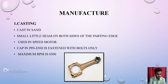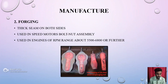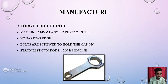Manufacturing process: First is casting. Casting sand leaves a small seam on both sides of the parting edge. Usage: speed motor. Cap and pin are fastened with bolts; maximum RPM is 6500. Second is forging. Forging produces a thick seam on both sides. Usage: speed motor with bolt and nut assembly, for engines with RPM range of about 5500 to 6800 or further.